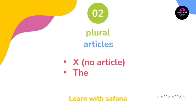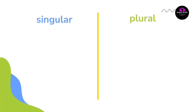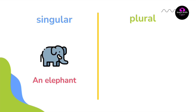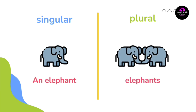الجزء الثاني هو plural articles. اذا كان عندي الاسم جمع، استعمل حالتين: اما no article تكون الجملة بدون articles، او اني استعمل the. ولو جينا نقارن بين الـ singular والـ plural نقول: a tree والجمع trees، an elephant والجمع elephants.